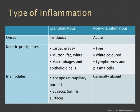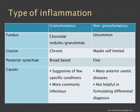Iris nodules are not present in non-granulomatous uveitis; they are present only in granulomatous uveitis, and are probably more specific than even the KPs. Nodules at the pupillary border are called Koeppe nodules. Nodules found on the iris stroma are called Busacca nodules, and when found in the angle they are called Berlin's nodules. These nodules are specific for granulomatous uveitis. Associated fundus features may include granulomas or nodules in the choroid, and posterior synechiae are broad-based and many in granulomatous uveitis, whereas they may be fine or none in non-granulomatous.